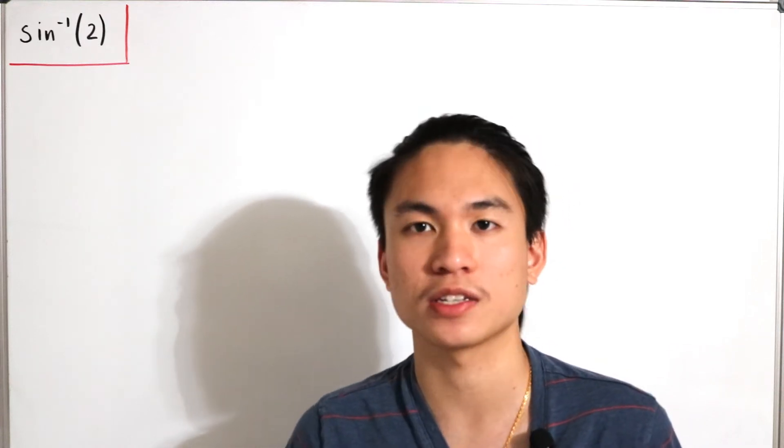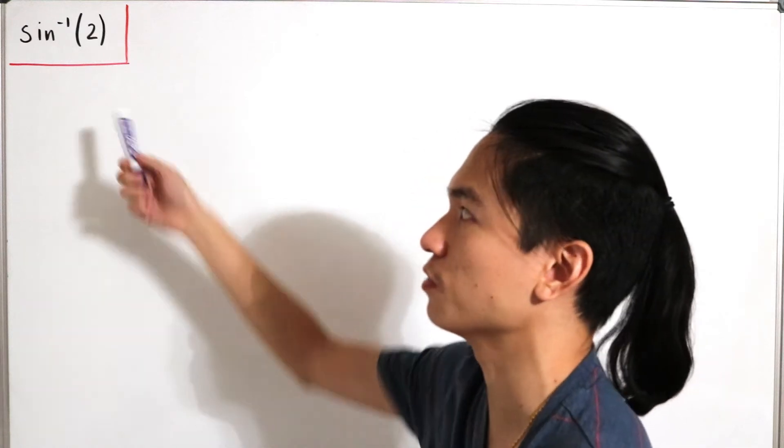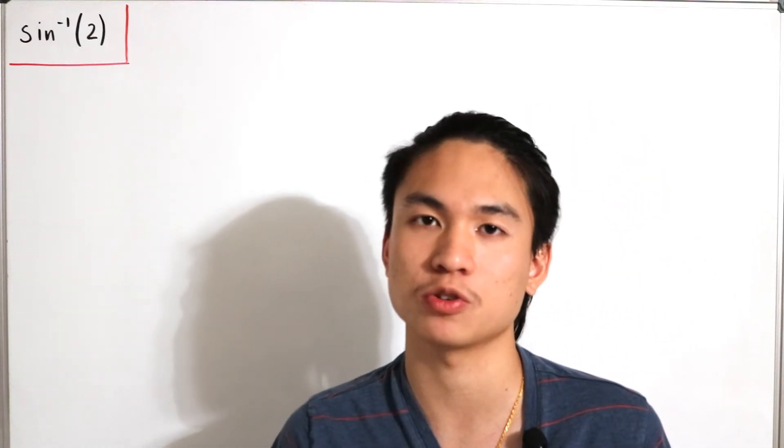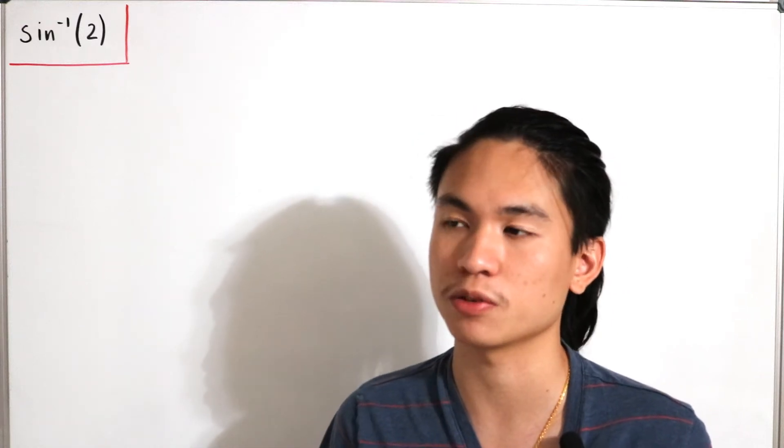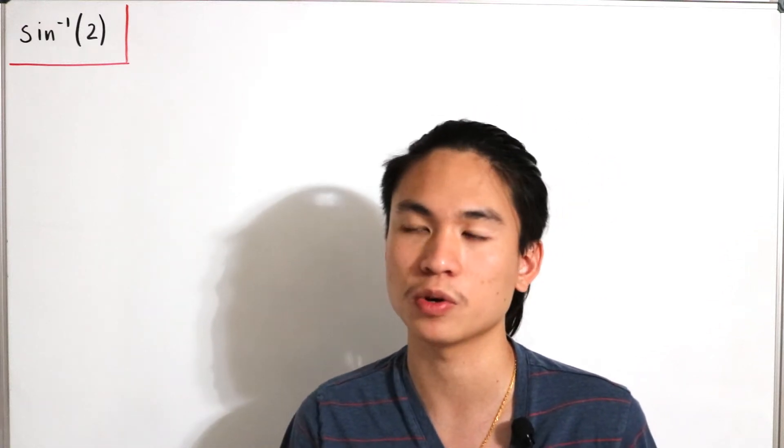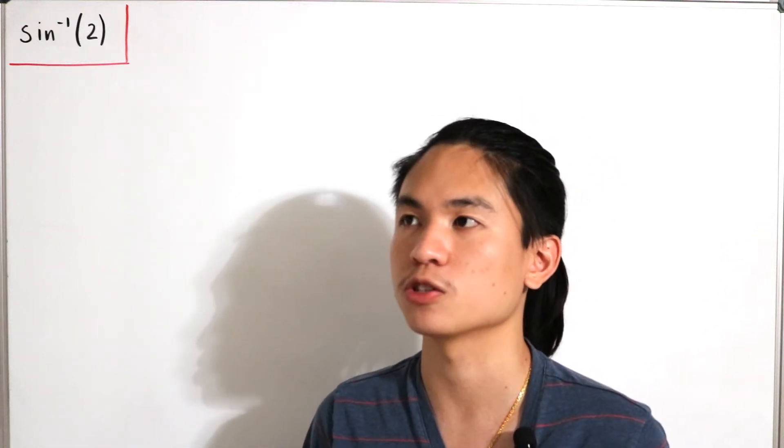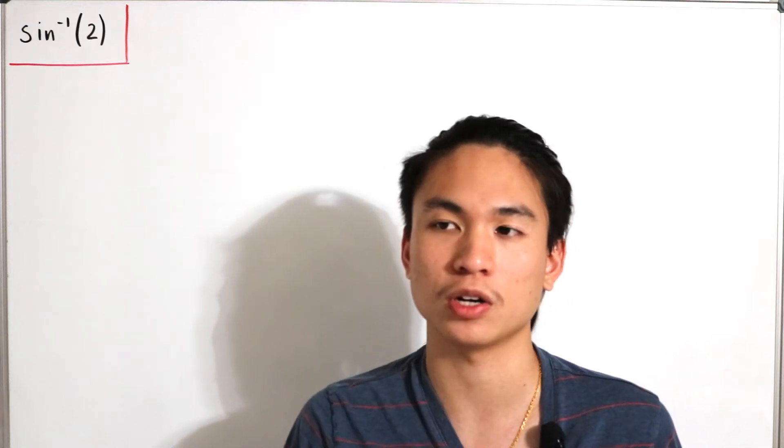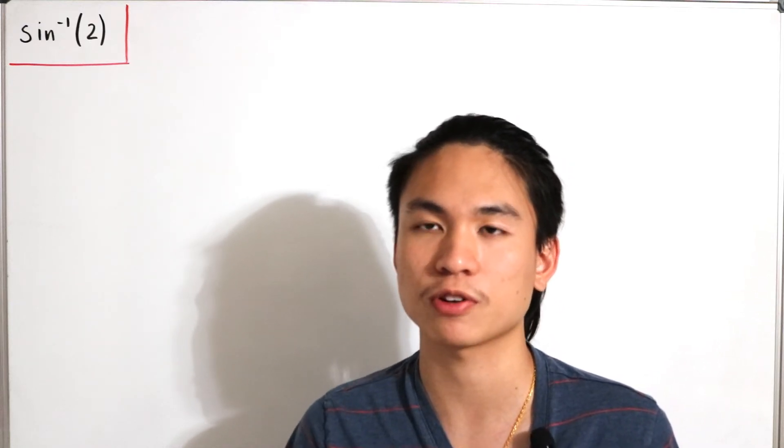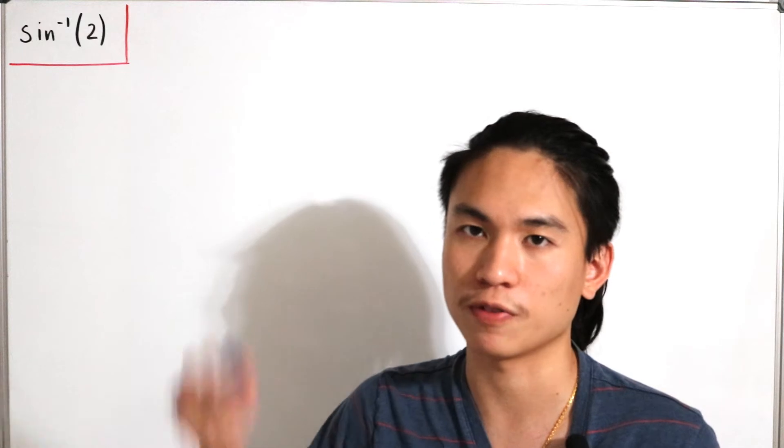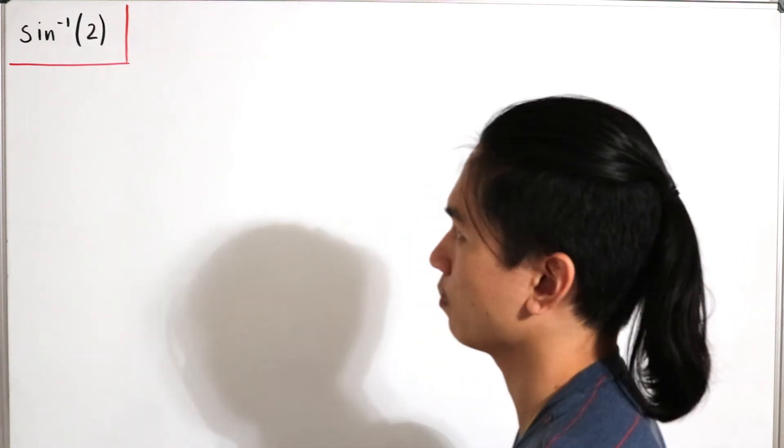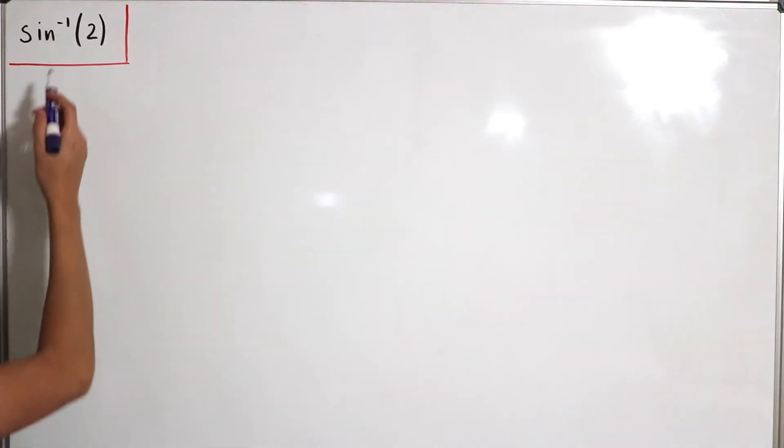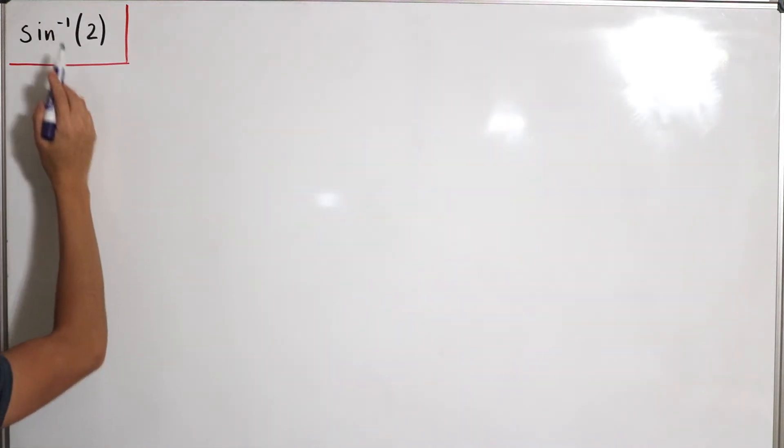So hence, in the process of trying to solve this computation, we're gonna have to use complex analysis from what we learn, especially using the exponential functions in terms of the relationship of the complex trigonometric functions. So let's actually just jump in and define our given inverse sine of 2.